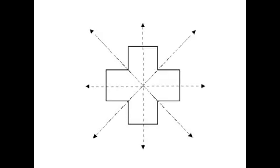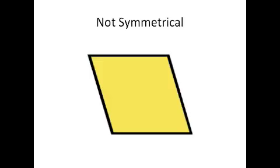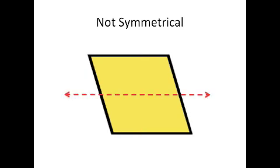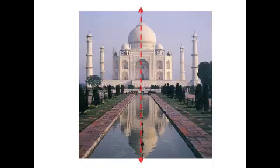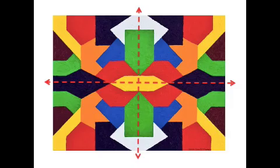Shapes may have multiple lines of symmetry or no lines of symmetry. Not every figure has line symmetry. Symmetry is found in the world around us — in nature, architecture, and art.